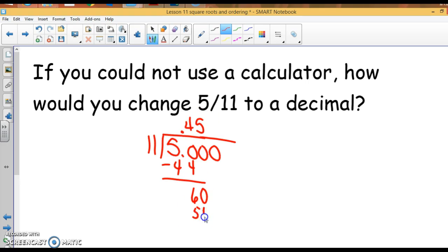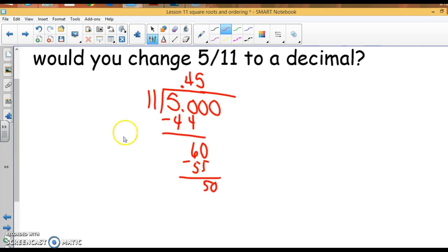That's 55. I subtract, I get 5, bring down a 0. Notice something happening here. 11 goes into 50, 4 times, that's 44. I subtract, I get 6, bring down a 0.